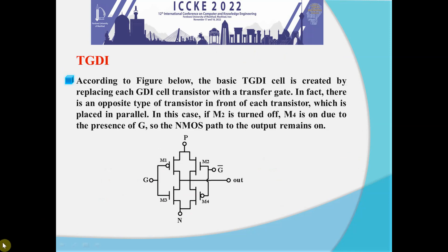Therefore, the TGDI technique is used in this study. According to the figure, the basic TGDI cell is created by replacing each GDI cell transistor with a transmission gate. In fact, there is an opposite type of transistor in front of each transistor which is placed in parallel. In this case, if M2 is turned off, M4 is on due to the presence of G bar, so the path to the output remains on.